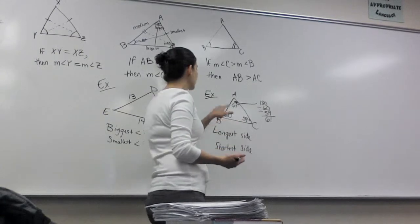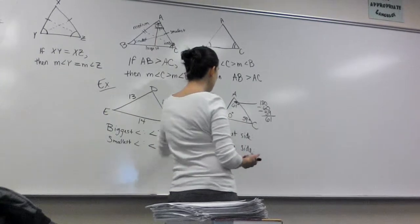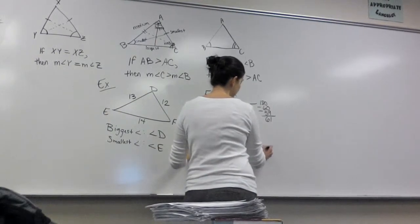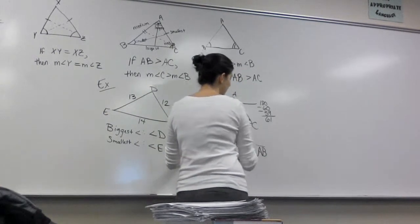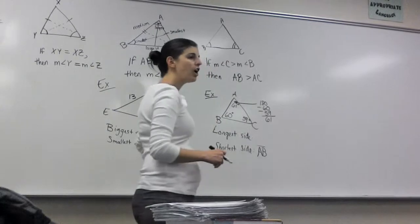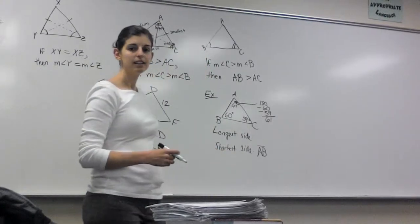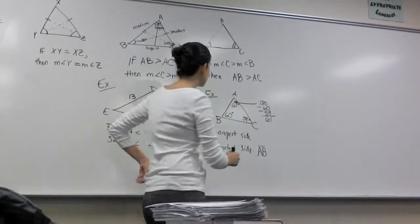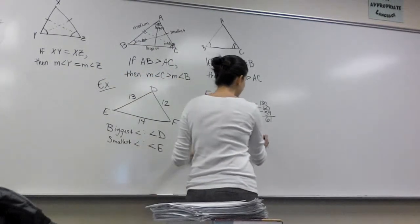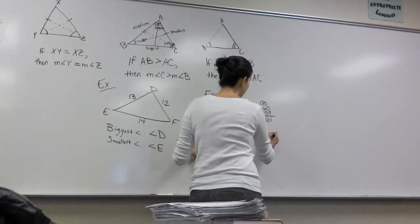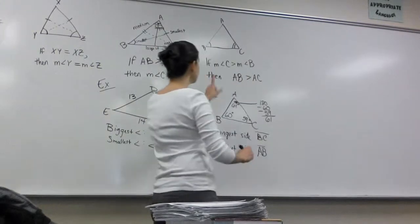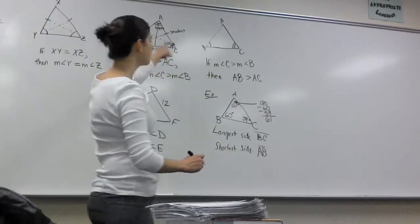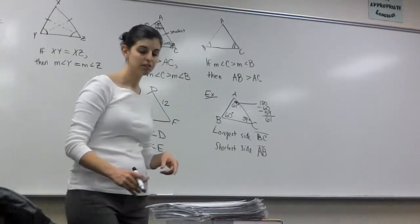AB is the shortest side. What's the longest side? BC — because it's across from the biggest angle, which is 61 degrees at angle A. That's what these two theorems tell you.